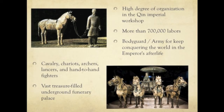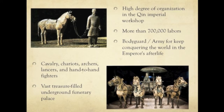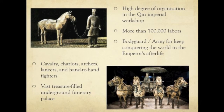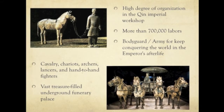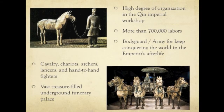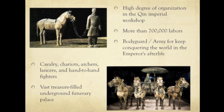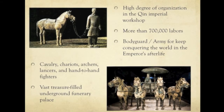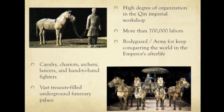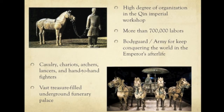Construction of the mausoleum involved over 700,000 workers laboring over 36 years. In addition to the terracotta army, the tomb of the first emperor is also located nearby. Archaeologists believe it contains a vast treasure-filled underground funeral palace, which matches the palace the emperor occupied in life. A parallel can be drawn to the Egyptian pyramids of pharaohs and the belief in life after death.